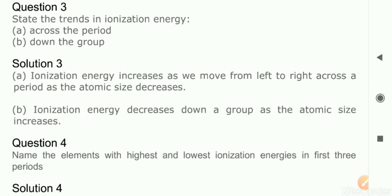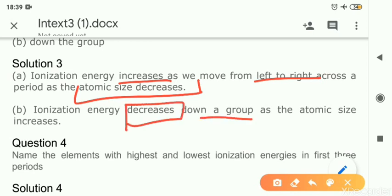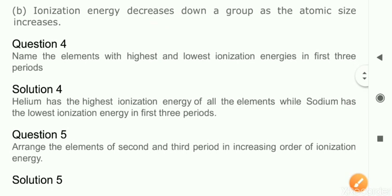Question 3: State the trends in ionization energy. First, across the period: ionization energy increases left to right because atomic size is decreasing and outermost electrons come closer to the nucleus, requiring more energy. Second, down the group: ionization energy decreases because the atomic size increases — the atom becomes bigger and bigger and the outermost electrons go farther from the center of the atom.